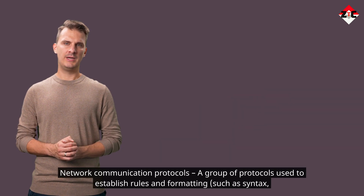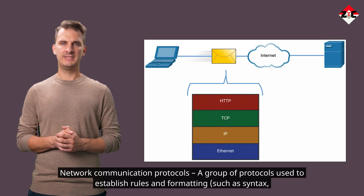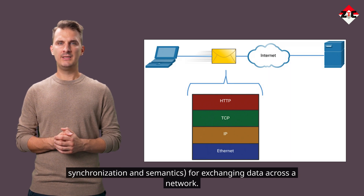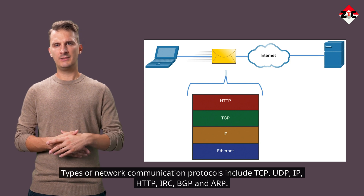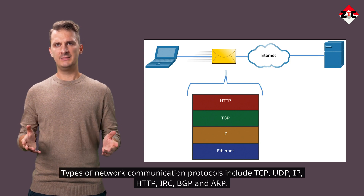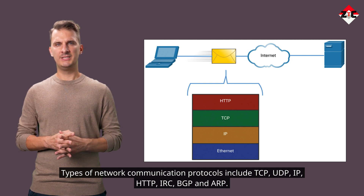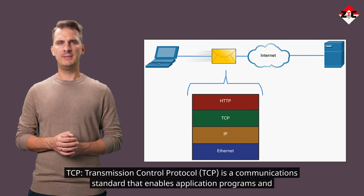Network communication protocols are a group of protocols used to establish rules and formatting — such as syntax, synchronization, and semantics — for exchanging data across a network. Types of network communication protocols include TCP, UDP, IP, HTTP, IRC, BGP, and ARP.